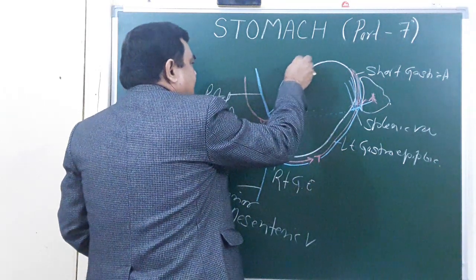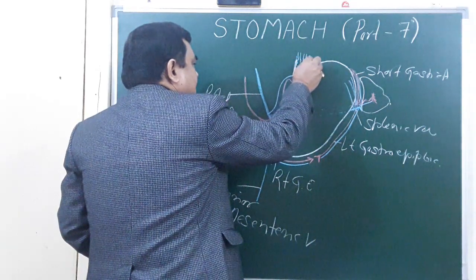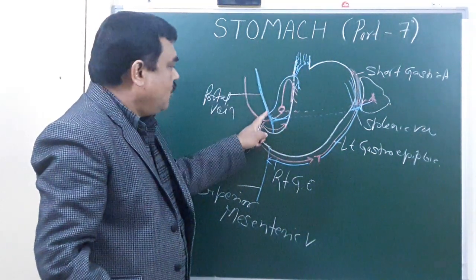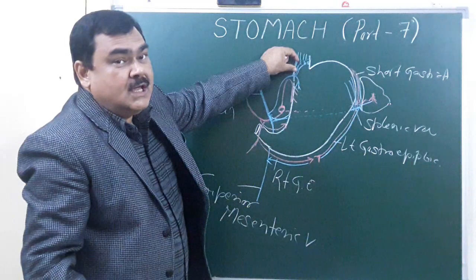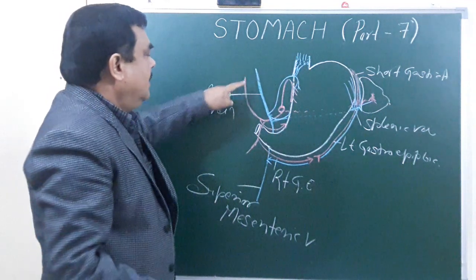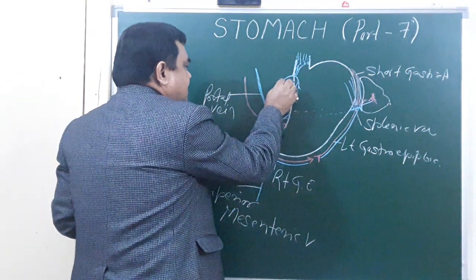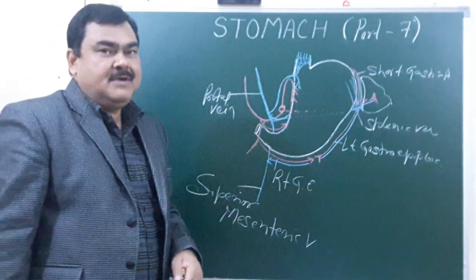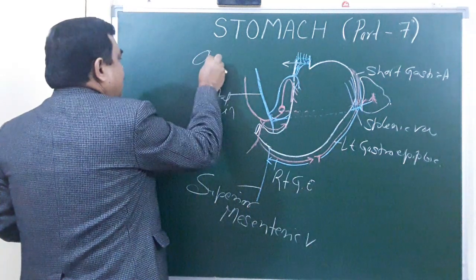The left gastric vein communicates with the esophageal vein, which is a systemic vein. This is the site of portal-systemic anastomosis — between the portal vein and the systemic vein, there is an anastomosis. In case of obstruction of the portal vein, blood passes through this anastomosis, and these veins at the site of anastomosis become dilated and form esophageal varices.